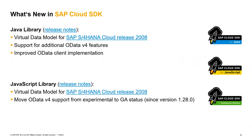In addition, in the realm of the JavaScript library, we have correspondingly released the latest virtual data model classes for S/4HANA Cloud release 2008. We have also moved the OData v4 support for the JavaScript library from experimental to generally available — since version 1.28.